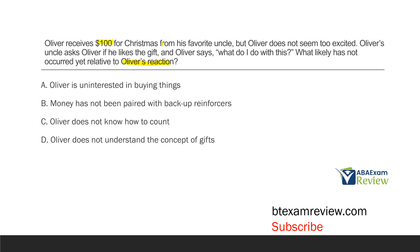Why would Oliver look at a hundred dollar bill and ask, 'What do I do with this?' That's because money is what we consider a secondary reinforcer — it's conditioned. Money holds no value until we start to pair it with other items that do have value.